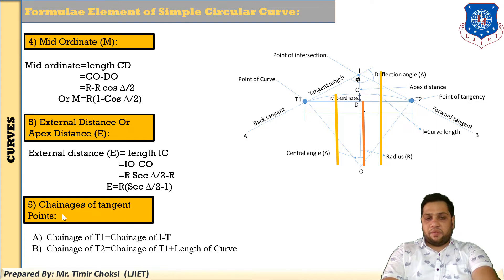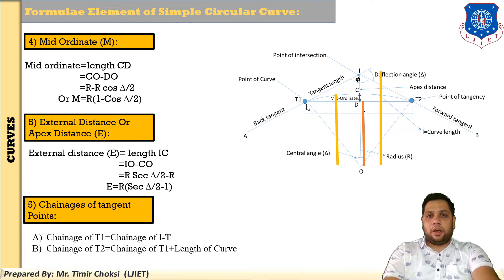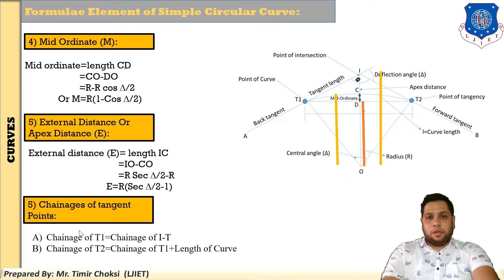The last formula, sixth, is the chainage of the tangent points. To find T1 and T2: chainage of T1 equals chainage of I minus tangent length. This gives the point of curvature. Then chainage of T2 equals chainage of T1 plus length of the curve, giving the point of tangency.